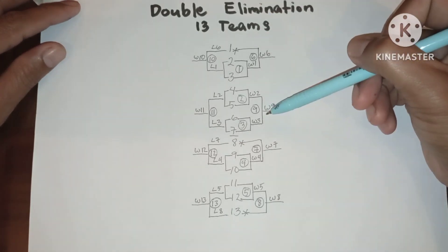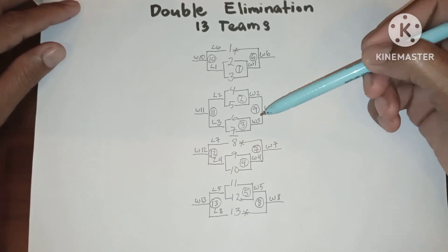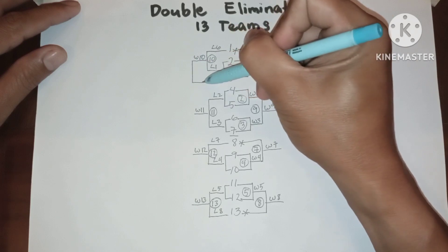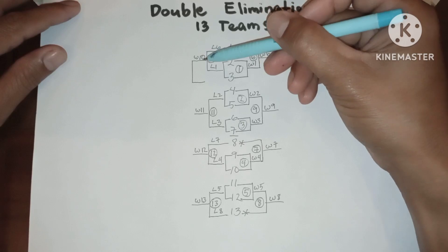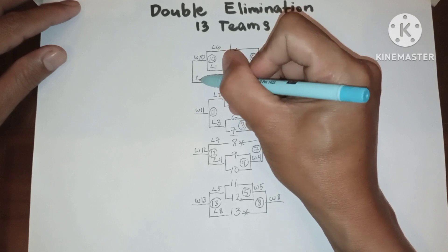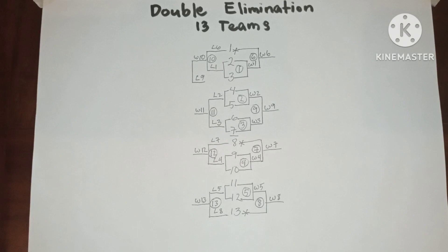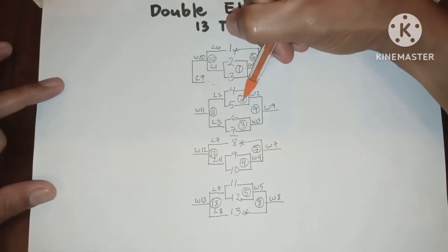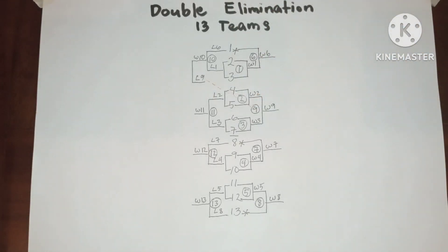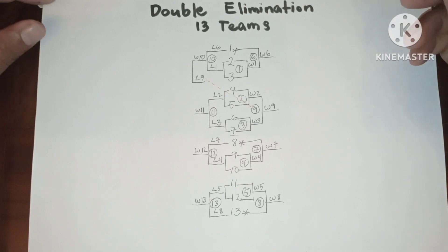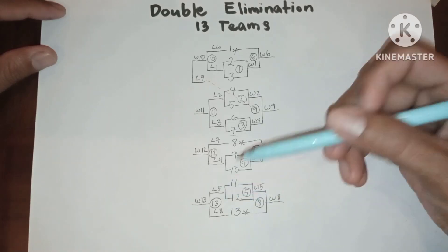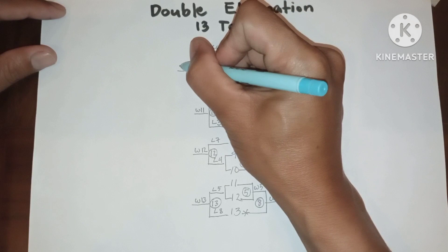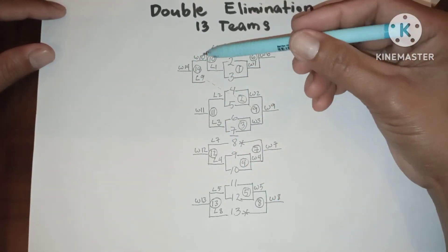Take note that we have one concern in the winners bracket — that is loser 9 from winner 9. So winner 10 will be playing against loser 9. Let us add the broken line where it came from. The game number — this is game 13, so this will be game 14. Let us have the result: winner 14. Now let's go back to the winners bracket.